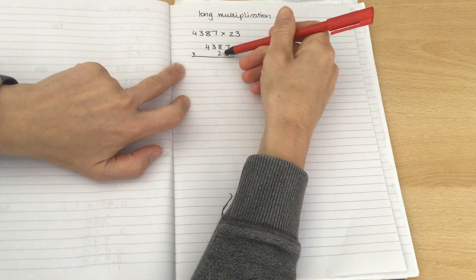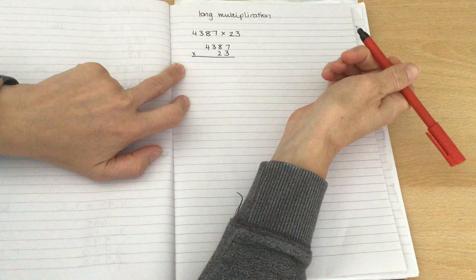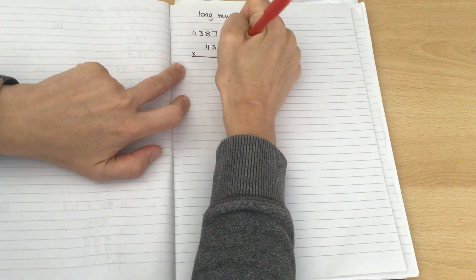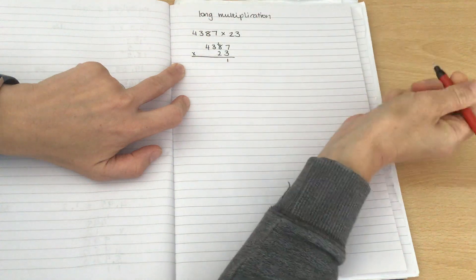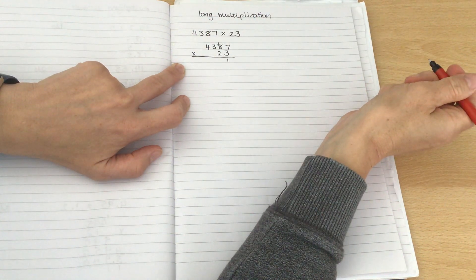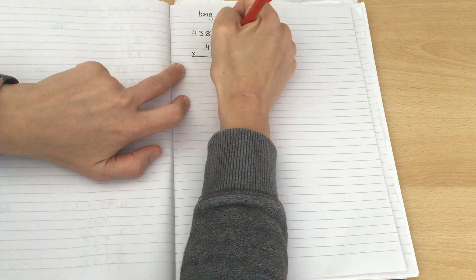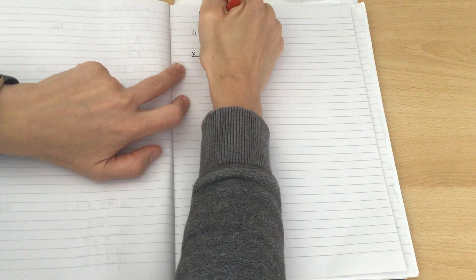So the first thing we're doing is we're multiplying this by 3. As a single digit, that means that we just have to multiply it out. 7 times 3 is 21. 1 goes down, the 20 goes across to the 10s. 3 times 8 is 24. Add on that extra 2, we end up with 26.